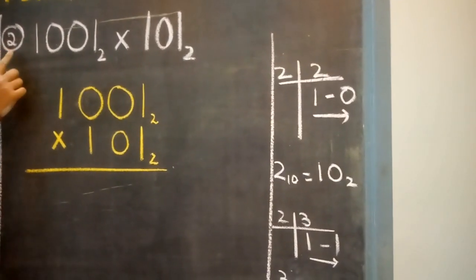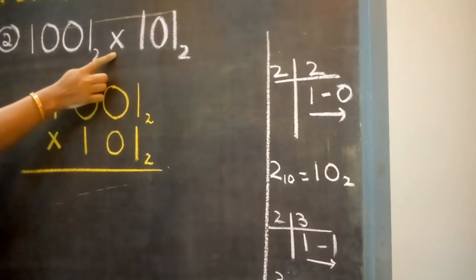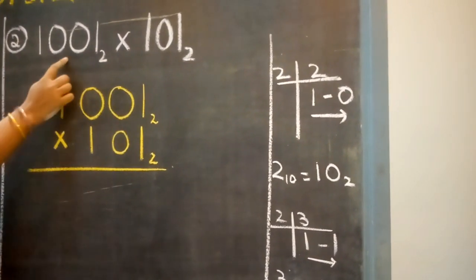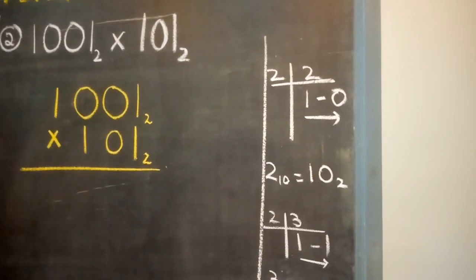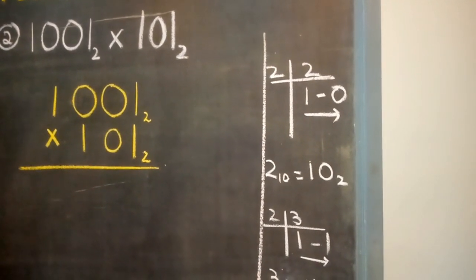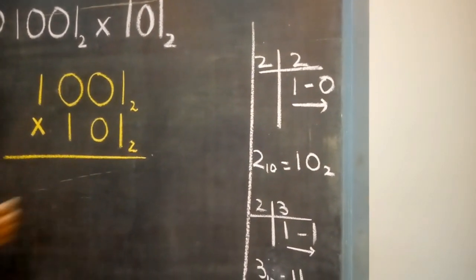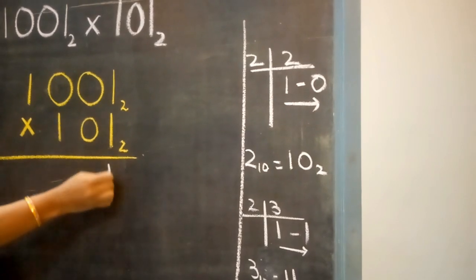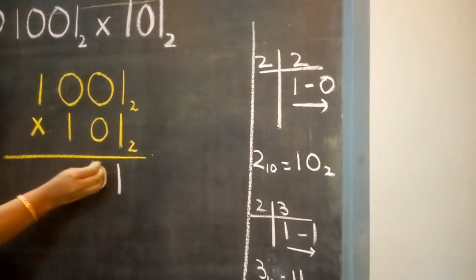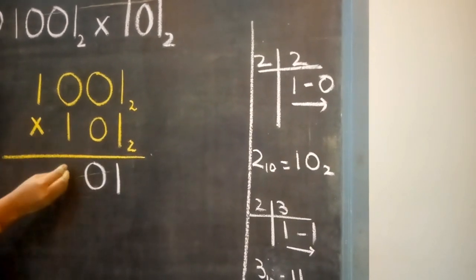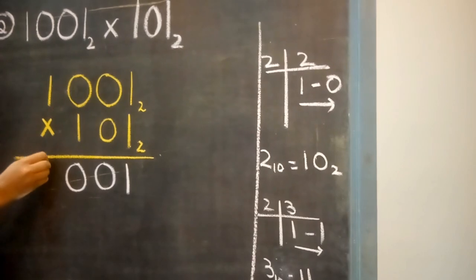Students, now we will solve question number 2, in which we have two binary numbers we need to multiply. We have written the binary numbers in vertical form according to their place value. So we will start multiplication from the right hand side following the rule of multiplication. 1 multiplied by 1 is 1, 1 zeros are 0, 1 zeros are 0, 1 ones are 1.